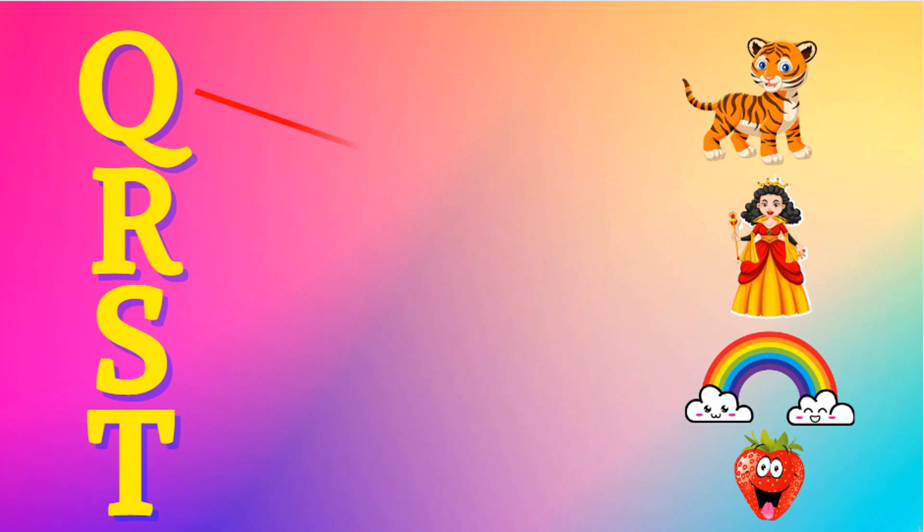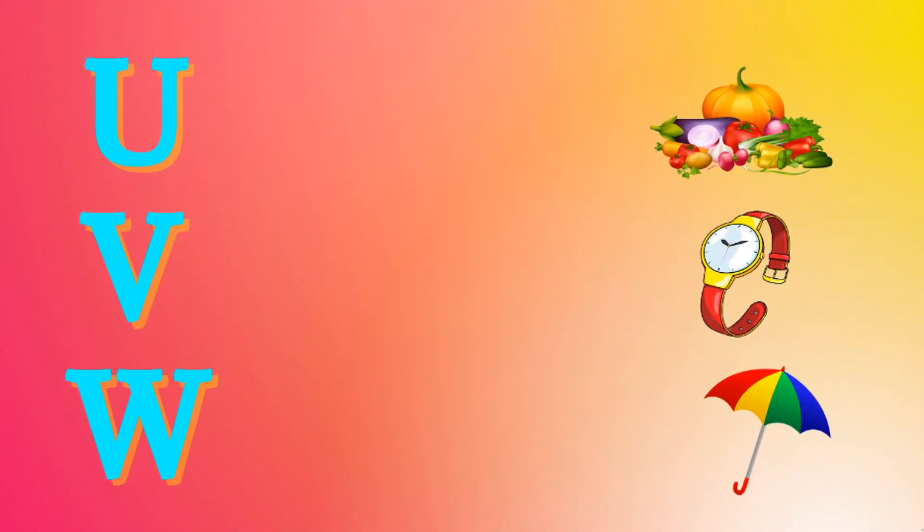Q for Queen, R for Rainbow, S for Strawberry, T for Tiger, U for Umbrella, V for Vegetable, W for Watch.